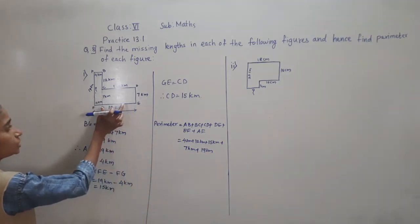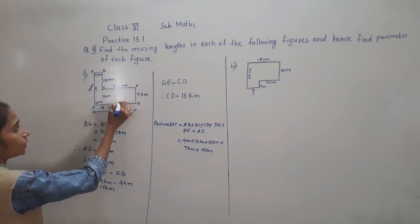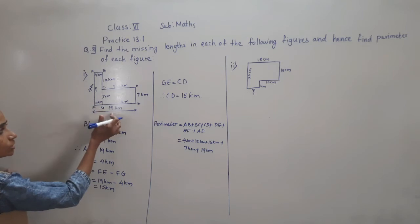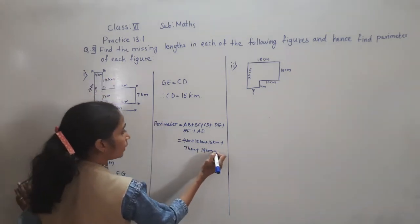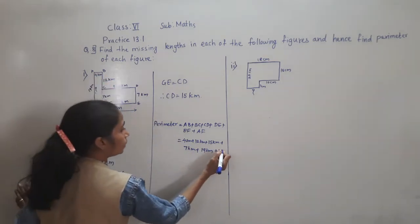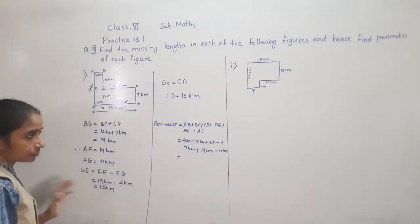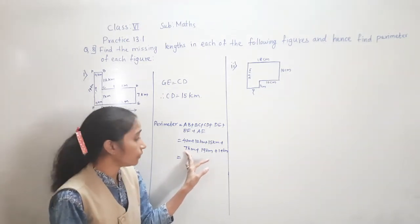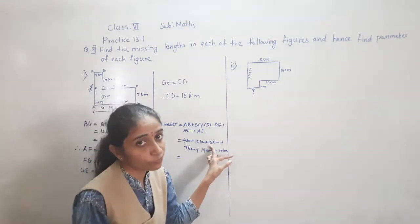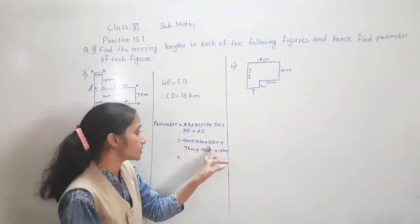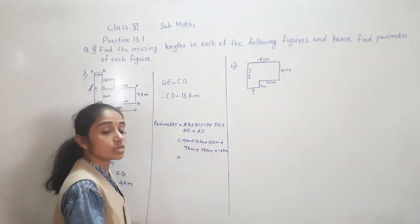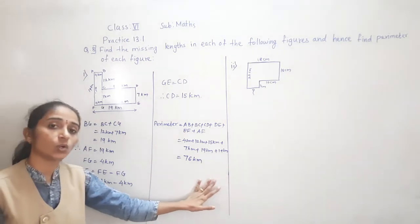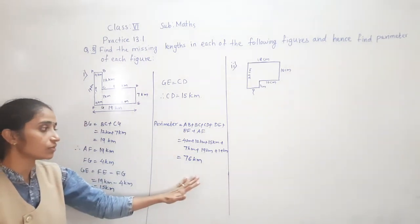We can also write EF as EG plus FG: 15 + 4 = 19 km. Now let's add: 19 + 19 = 38, 38 + 7 = 45, 45 + 15 = 60, 60 + 12 = 72, 72 + 4 = 76. So the perimeter of this given figure is 76 km.